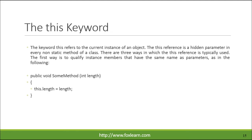The keyword this refers to the current instance of an object. The this reference is a hidden parameter in every non-static method of a class. There are three ways in which the this reference is typically used. The first way is to qualify instance members that have the same name as parameters.